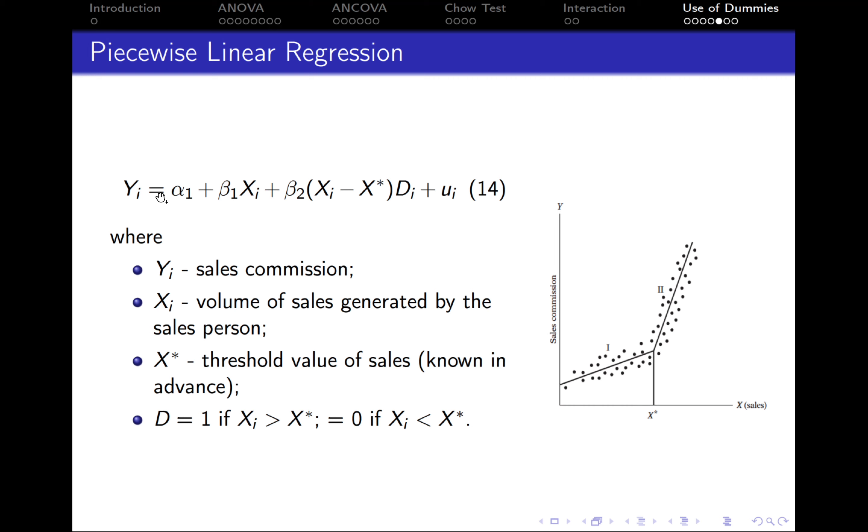Y is sales commission, alpha is the intercept, Xi is the volume of sales generated by the salesperson. X* is the threshold value, the target value which is set in advance, probably set by the chief executive officer in the company.